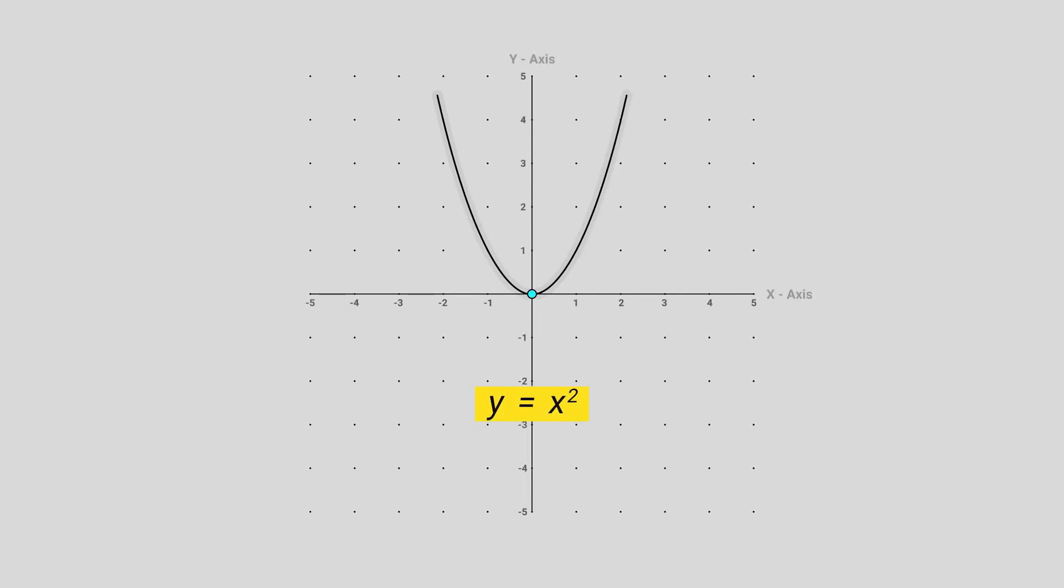We all know the graph of x². If we add something inside, the graph moves towards the left, and if we subtract something, it moves towards the right. Similarly, if we add something to x², the graph moves upward, and if we subtract it, it moves downward.